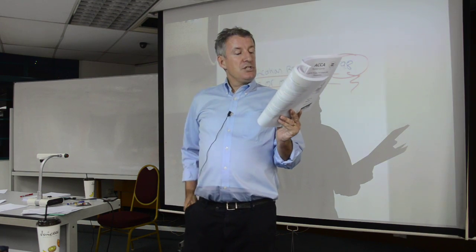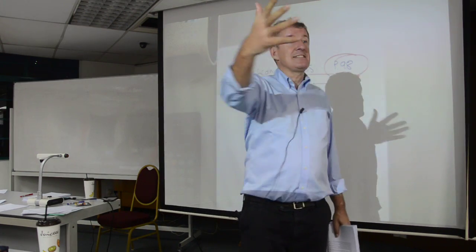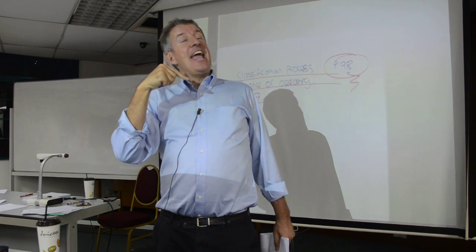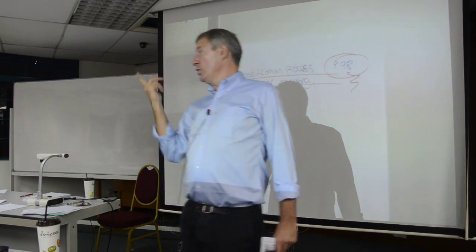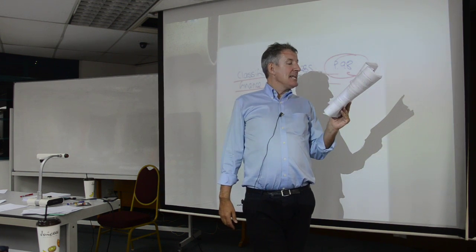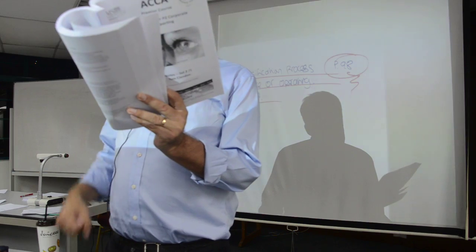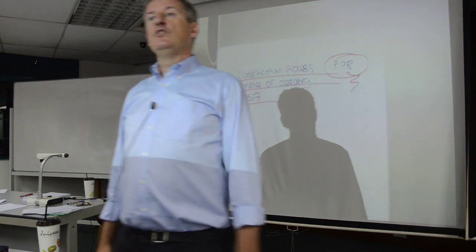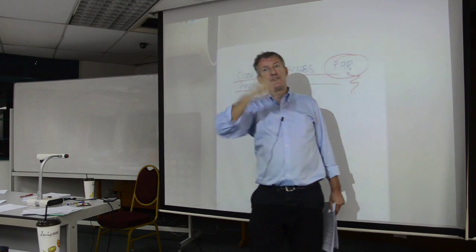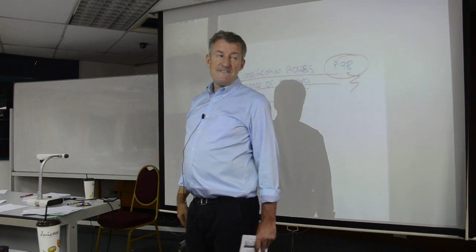The lessee has the ability to continue to lease the asset for a secondary period at a very cheap rate. So if after five years you've leased the asset and then you've got a secondary period where you can lease it for another $1, then clearly if the asset has a longer life than originally thought, that would be indicative of the lessee benefiting. And any gains or losses from fluctuations in the fair value of the residual value fall to the lessee. So if we look after the asset and at the end of the lease it's very valuable, we benefit from that residual value. These are a list of clues that would suggest it is a finance lease.